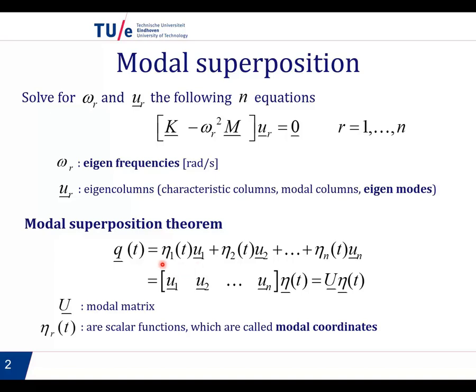And these etas, eta1, eta2, etc., are what we call modal coordinates. This sum can be written in matrix column form if we put the eigenvectors in columns in one matrix, and we put the modal coordinates in one column. To make it even more compact, we can write the modal matrix simply as capital U. And this multiplied by the column of etas will give us the generalized coordinates.